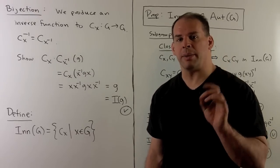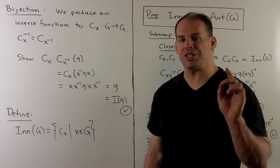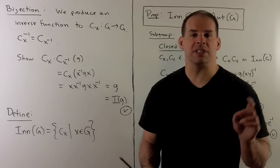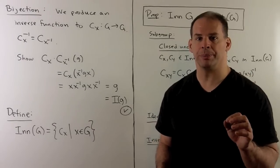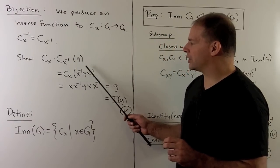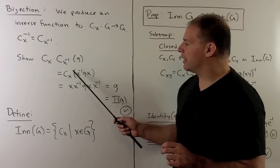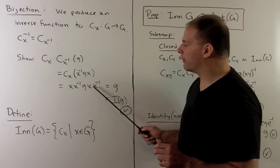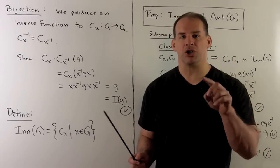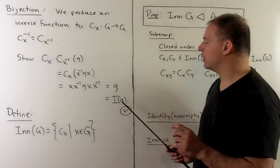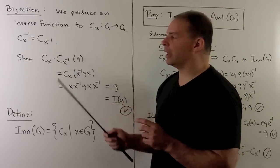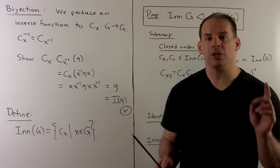To show each c_x is a bijection, we produce the inverse map. The claim is that the inverse of c_x is c_{x⁻¹}. Applying c_x to c_{x⁻¹}(g): we get x(x⁻¹gx)x⁻¹, and the x's cancel in pairs leaving g — the identity map. The reverse order gives the same answer. So each c_x is a bijection, hence an automorphism.